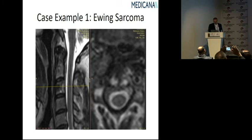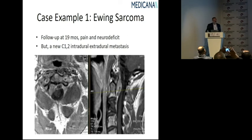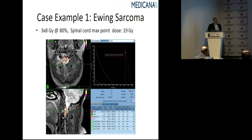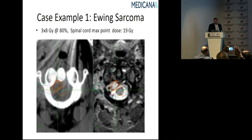This is the C3 MRI, T2 sequence. At 19 months, he developed another metastasis around C1–C2 level — an extradural metastasis compressing the spinal cord. We decided to treat this metastasis again with the same regimen: 3 fractions of 8 Gy each.